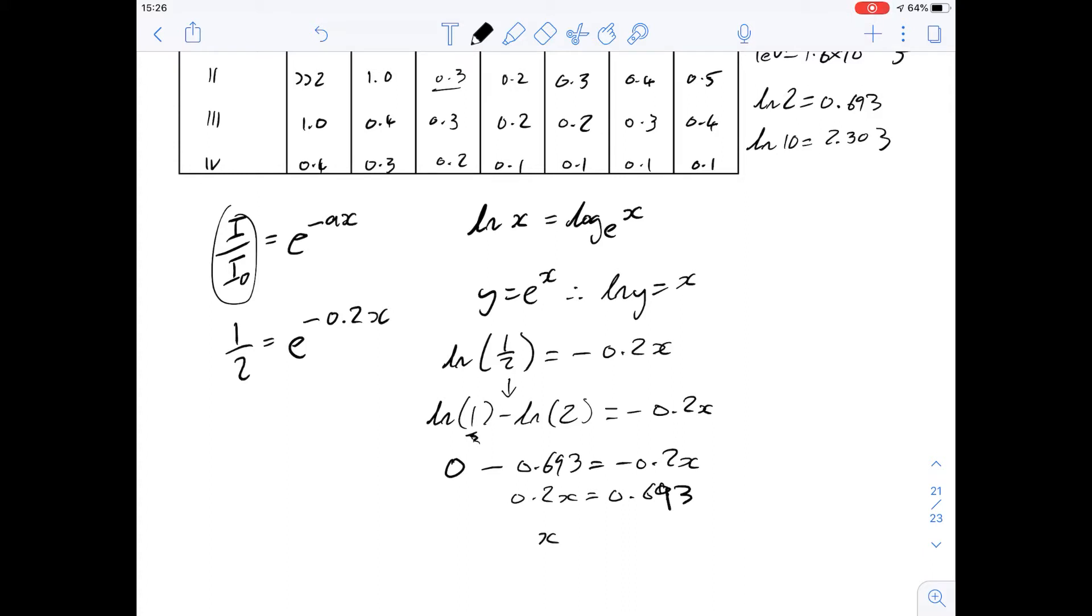If we divide both sides by 0.2 you can round this up to 0.7 because the answers that are given to you are rounded and so we get an answer of 3.5 centimeters and in this case that works out to be answer B for question 73.